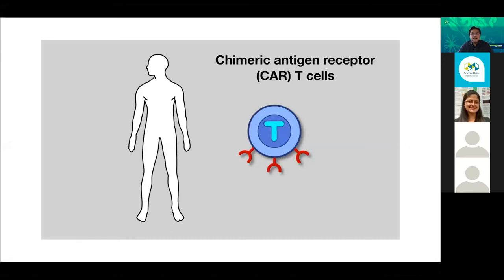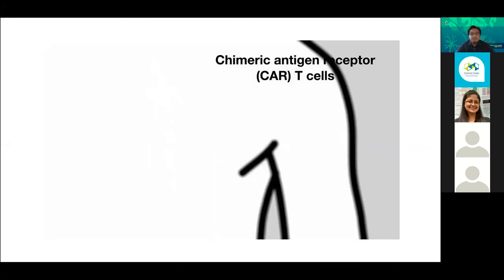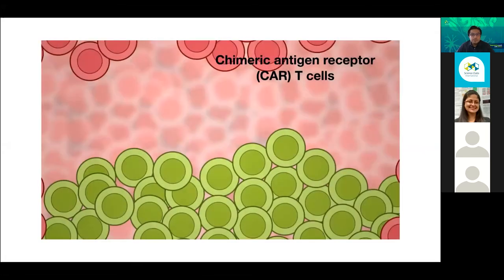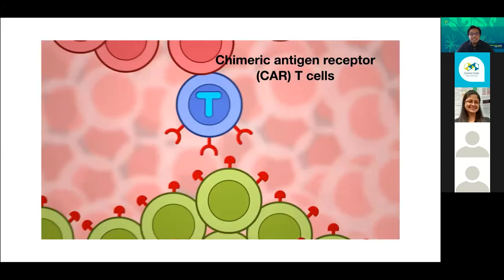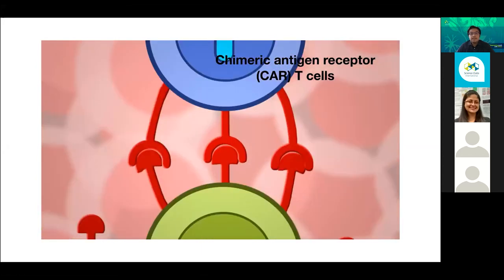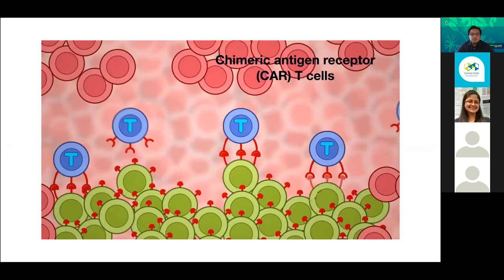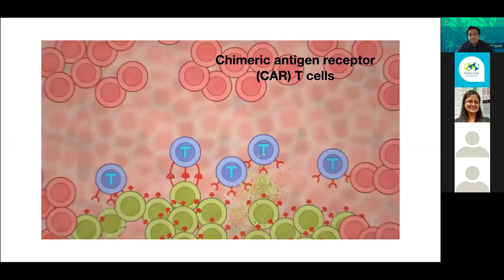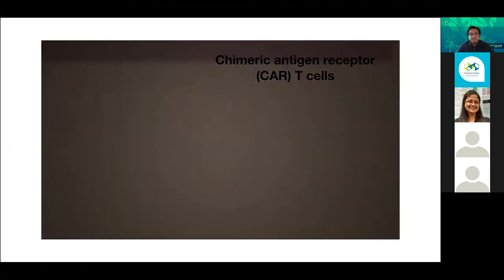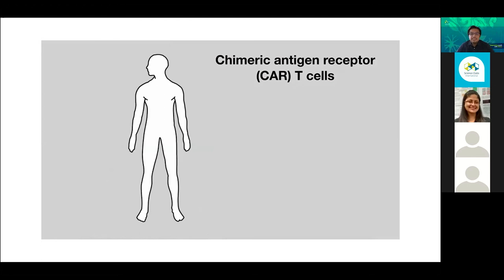Some researchers figured out a few years ago that you can modify these T-cells with synthetic receptors. You can use synthetic biology and put in receptors that are going to make the T-cells identify particular cells on the body and eliminate them. Those proteins could be landmarks of cancer, and in that way you can redirect this powerful cytotoxic activity of the T-cells against cancer.